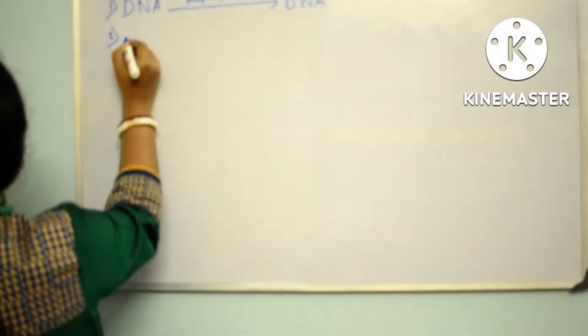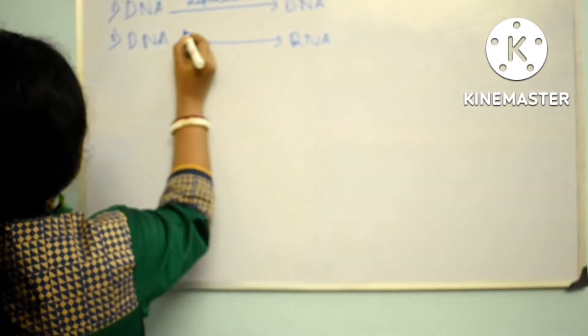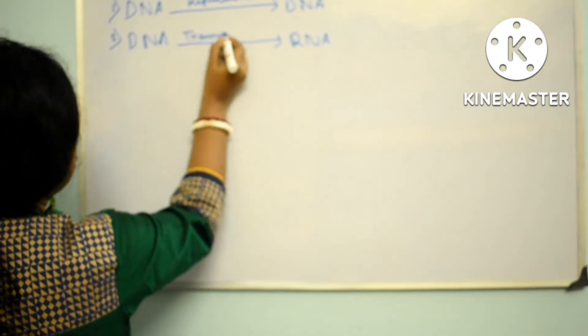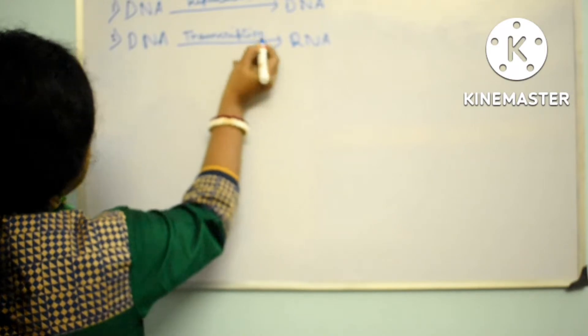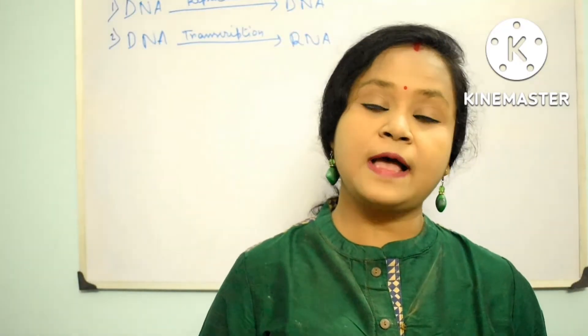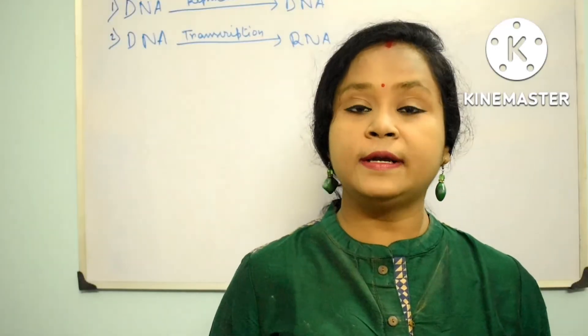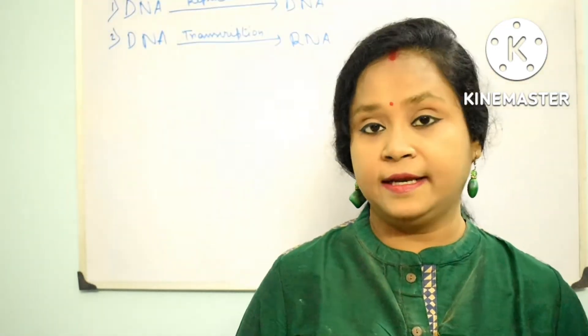The next point is DNA to RNA. By the process of transcription, DNA can produce RNA. This is known as transcription, and it is called the heterocatalytic property of DNA.